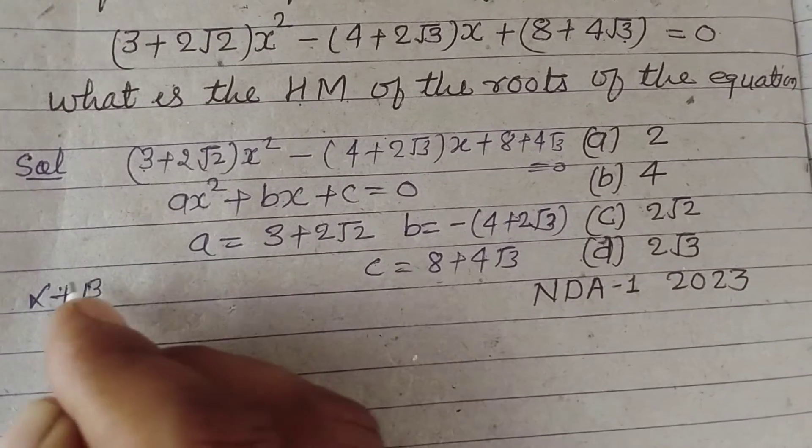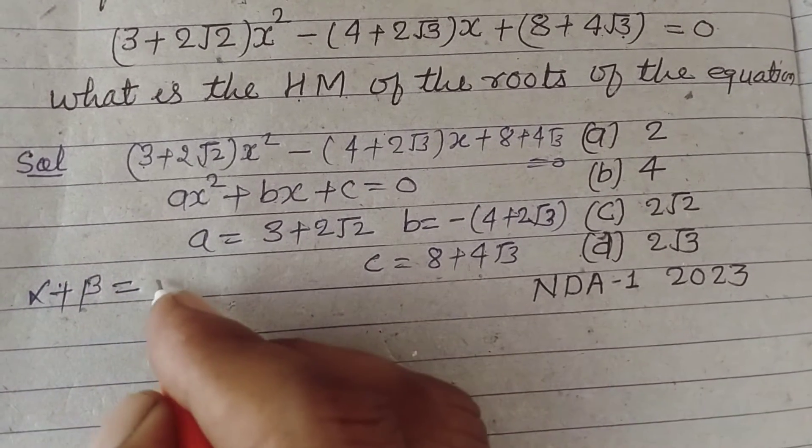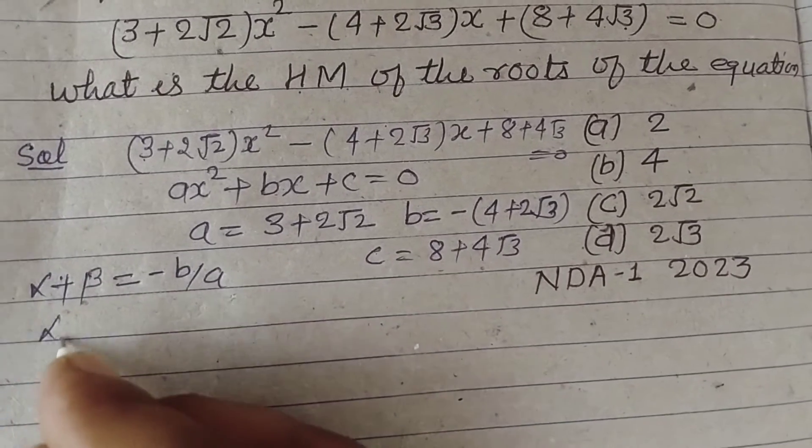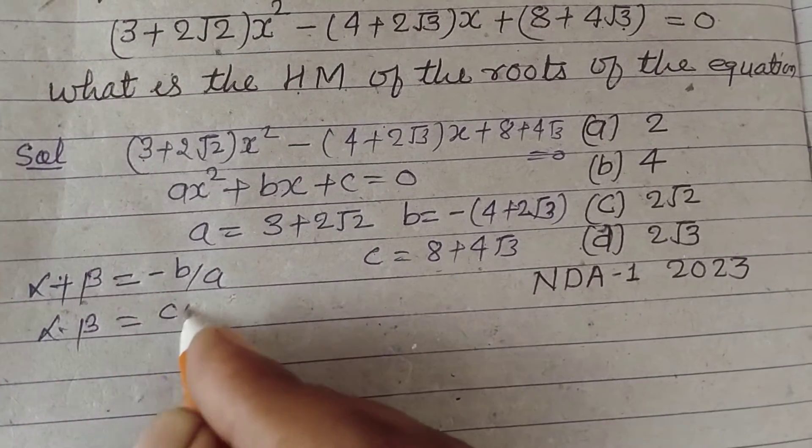If alpha and beta are roots of the quadratic equation, then alpha plus beta equals -b/a and alpha into beta equals c/a.